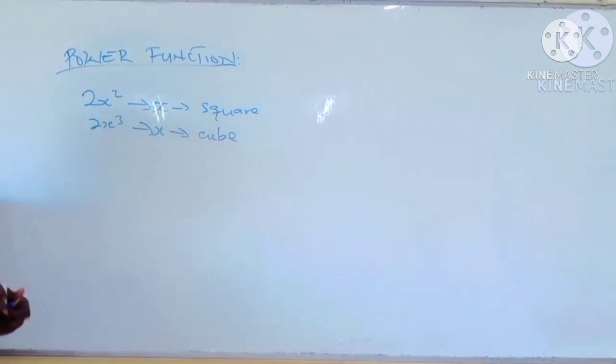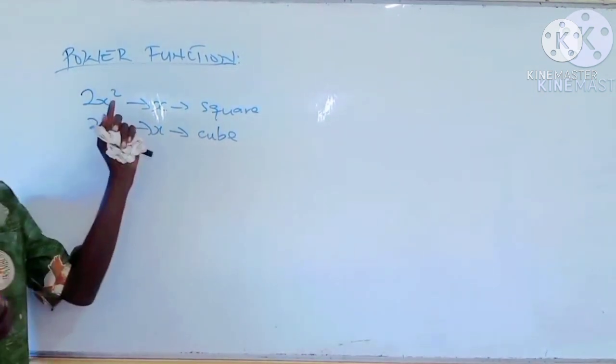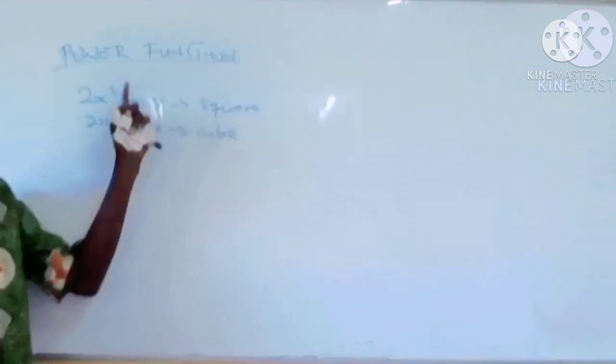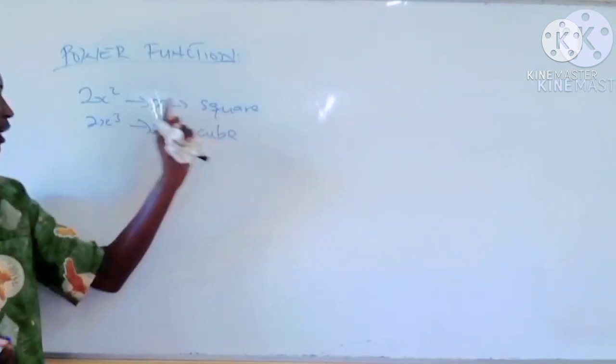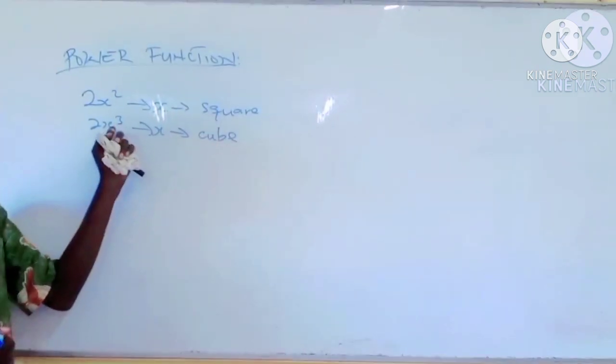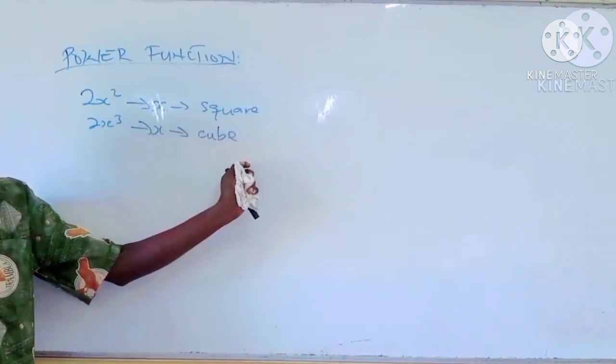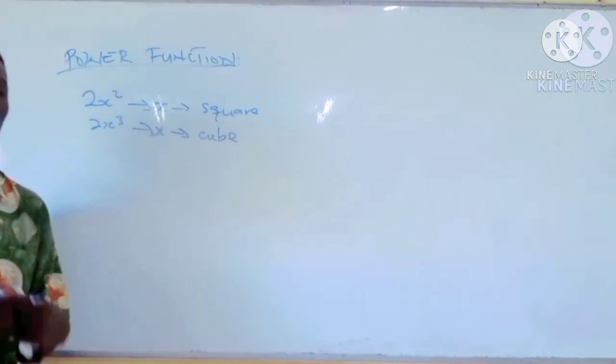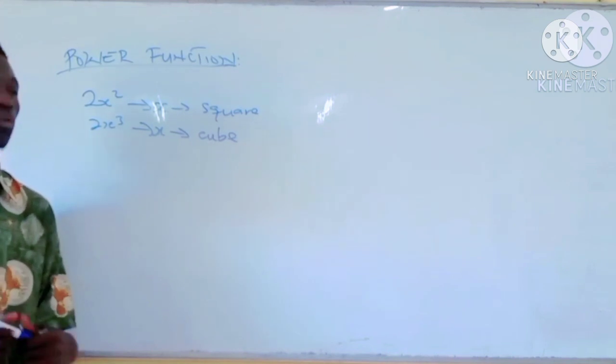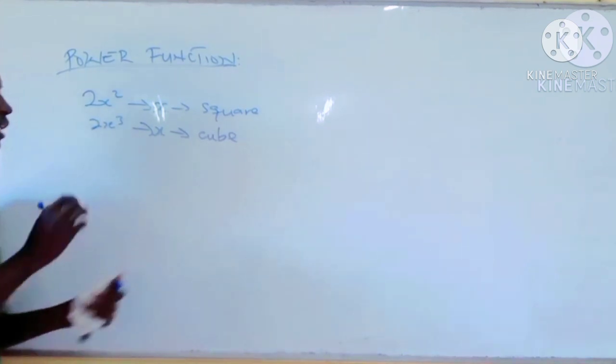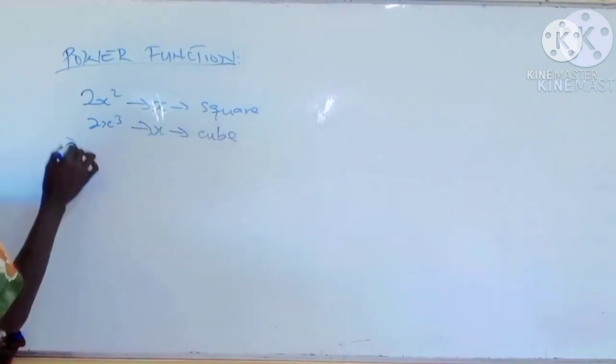So whenever you see 2x squared, you know the highest power of x is a square. And the highest power of 2x cubed is a cube.